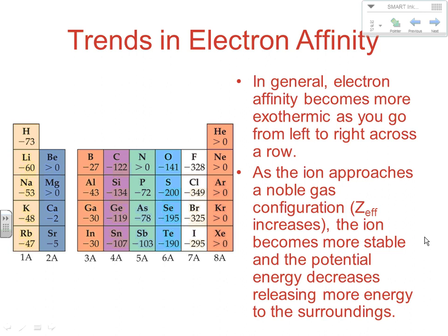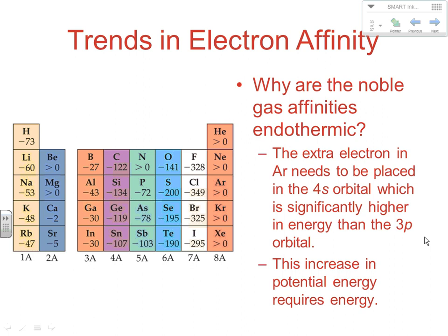As we go across, we've got a bigger drop in potential energy — more energy is released as we get closer to the noble gas configuration. Why are noble gases endothermic, not exothermic? The extra electron placed in argon needs to go into a 4s orbital, which is significantly higher in energy than the 3p orbital. That increase in potential energy requires energy input — it's endothermic — to cause noble gases to pick up an electron.